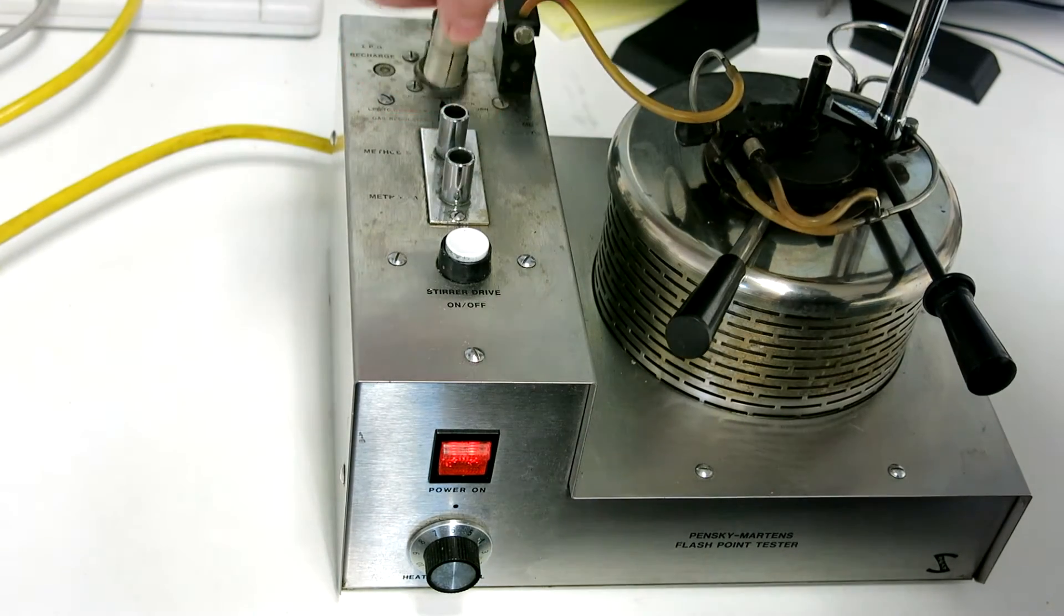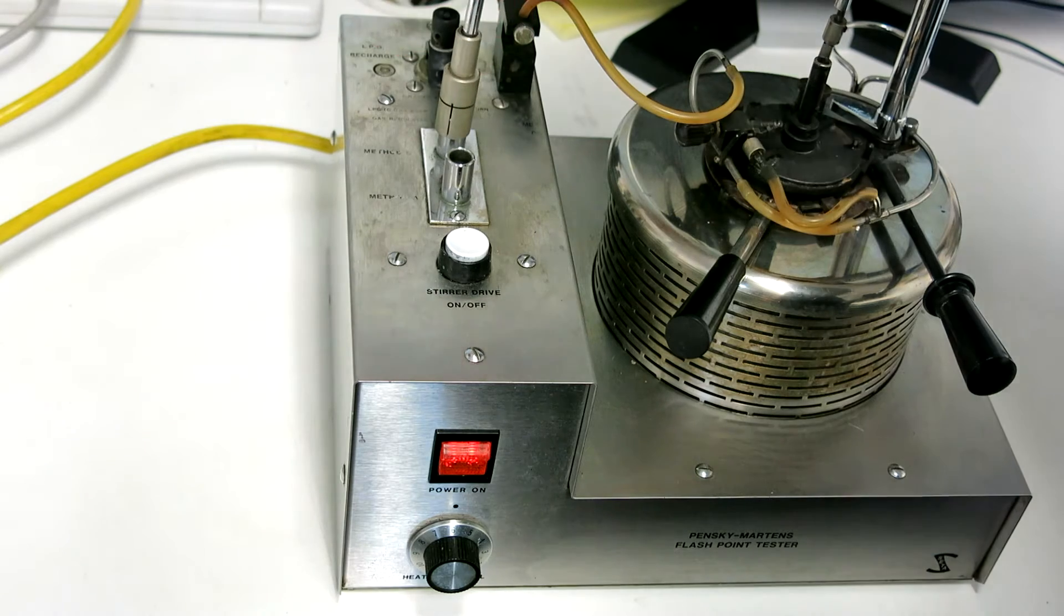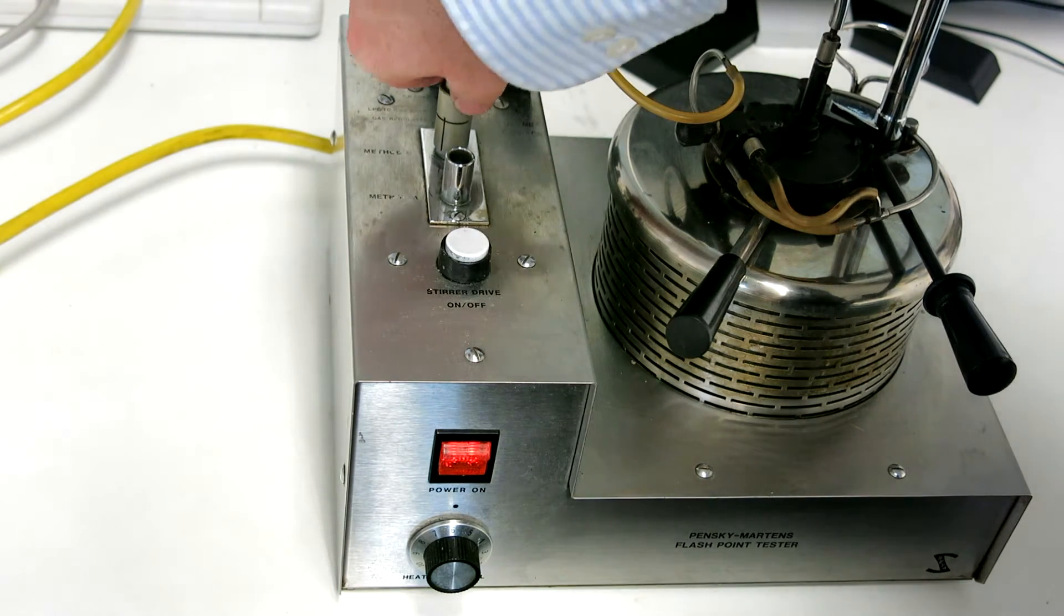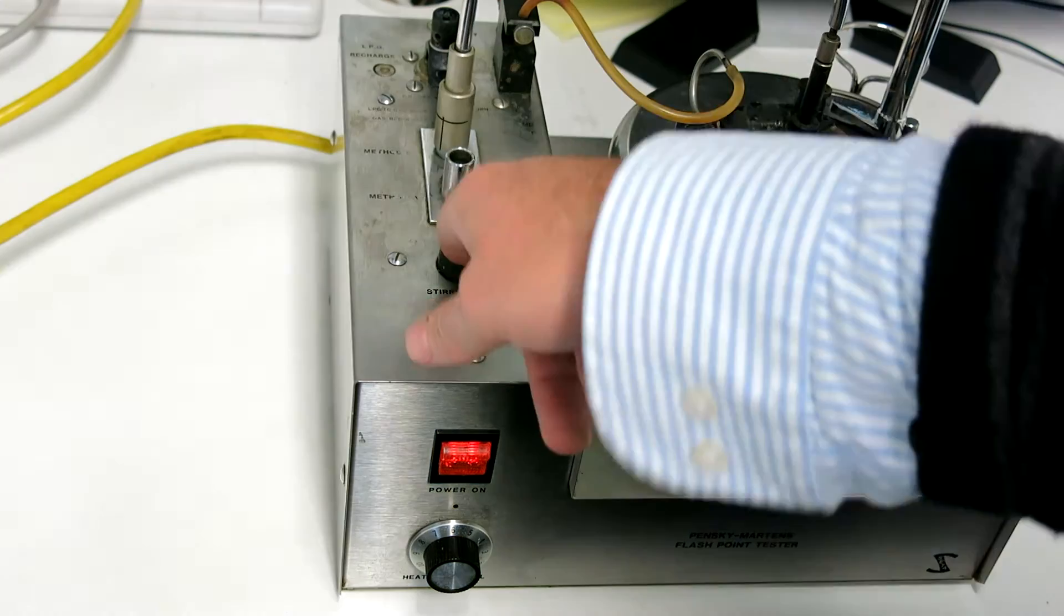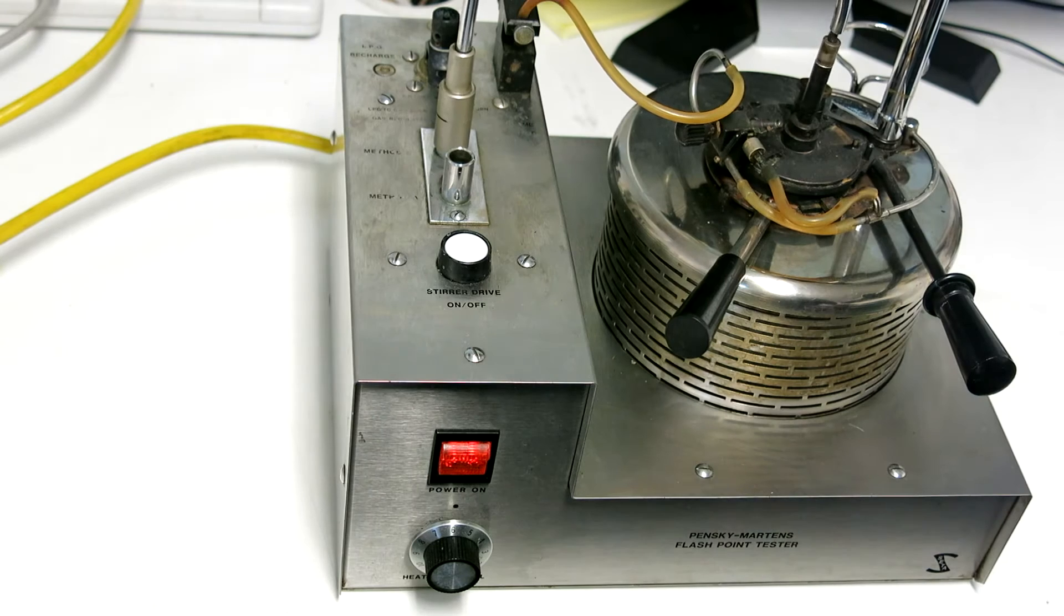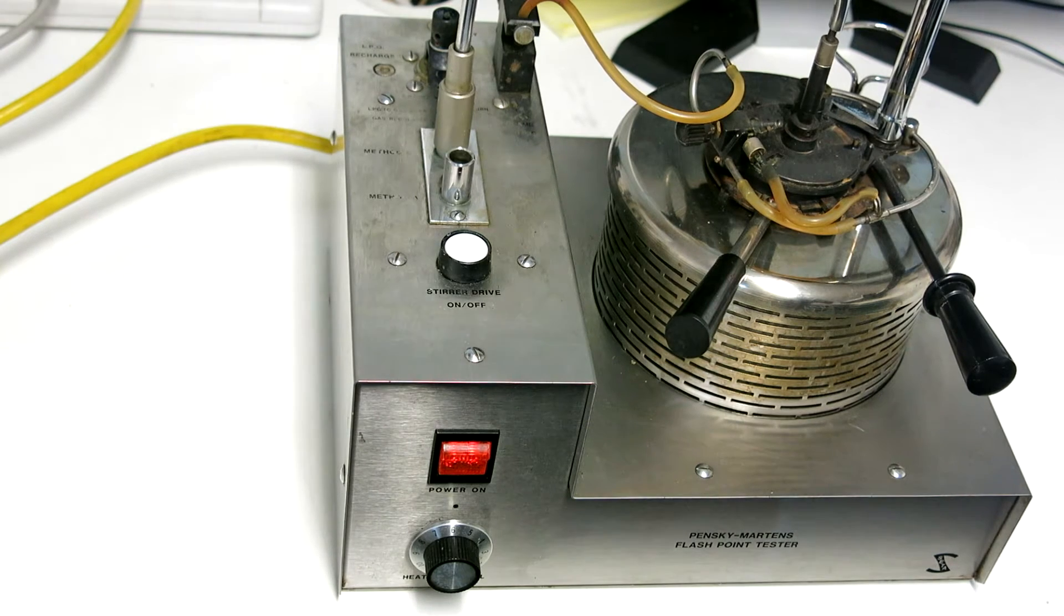The beauty of this is that you can change the method, you can put it onto different ones. So that's a very simple mechanism there. It fits in here, goes onto that one and that's obviously fast, so you've got a slow speed and a faster speed there.